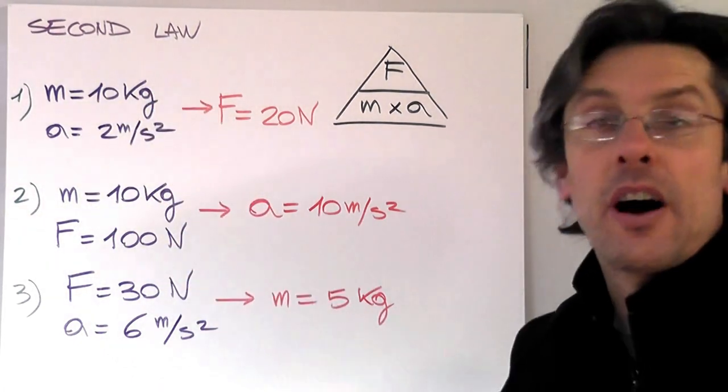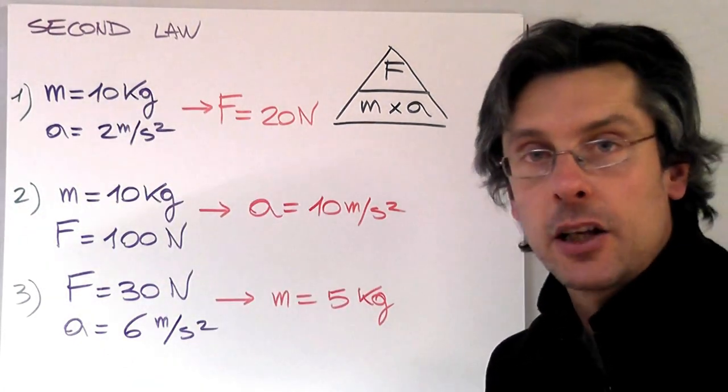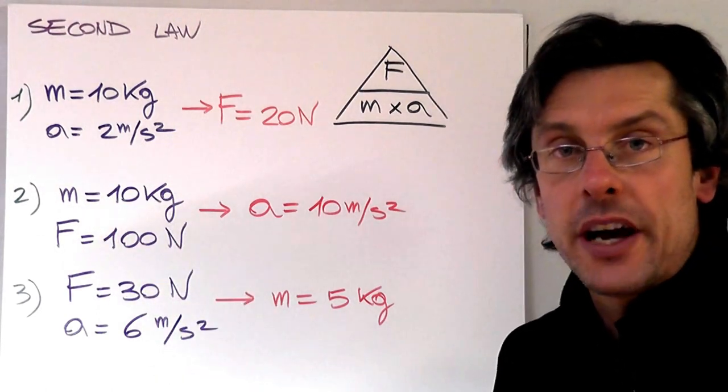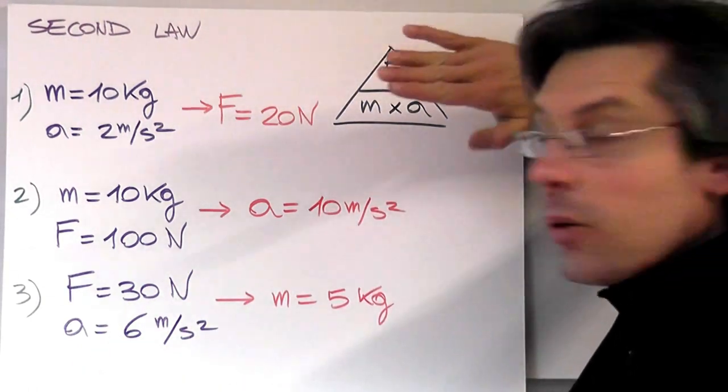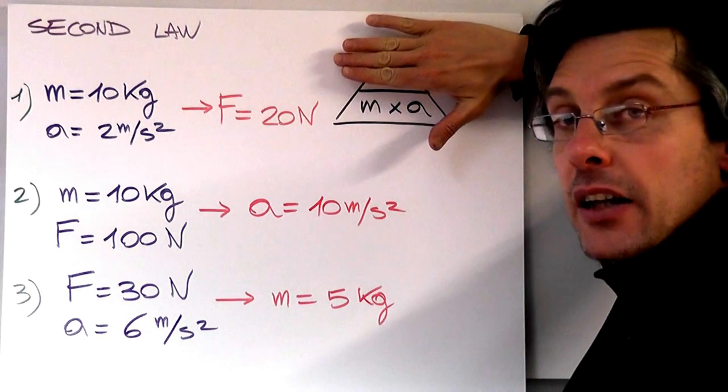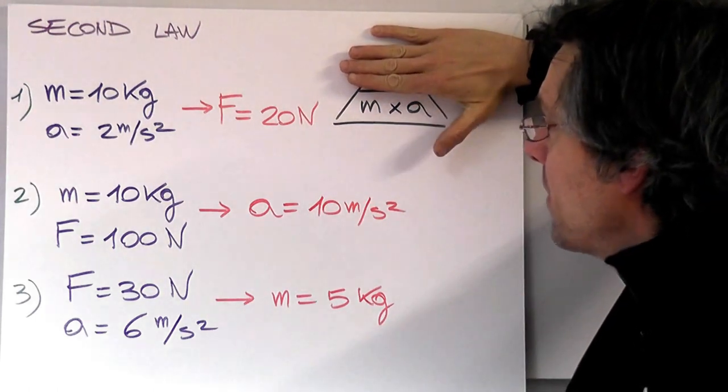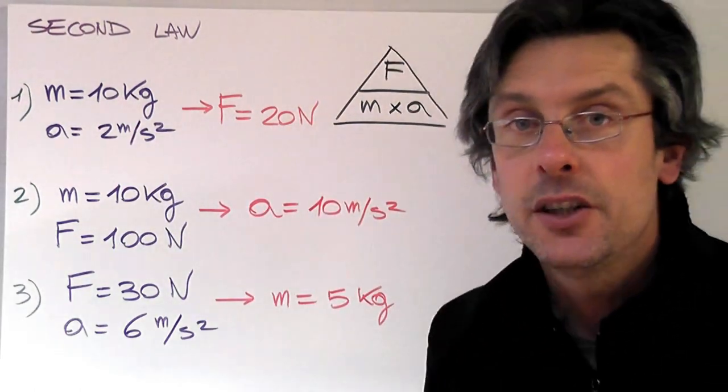So let's start with our first example. We have a mass of an object, 10 kilograms, its acceleration, 2 meters per second squared. We want to know what's the force acting on that object. So, as usual, I will cover the part I want to find, and that is F. And you see, M times A, 10 times 2, that gives me 20 newtons.